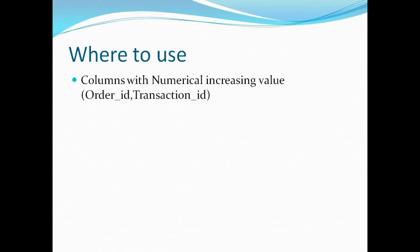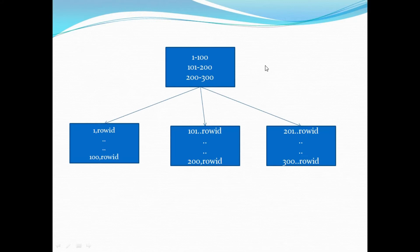But the basic idea behind reverse B-tree index is to avoid index block contention and to improve the data load performance or data update performance. Now, in which case should we go ahead and create a reverse B-tree index? When we have a column in a table that is being populated with numerically increasing values — for example, order ID in an order table or transaction ID in a transaction table. The next row will have a higher order ID or higher transaction ID than the previous row, possibly populated using an Oracle sequence or a sequence generator in Informatica.